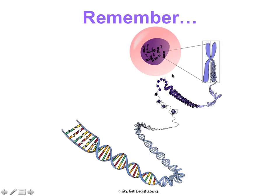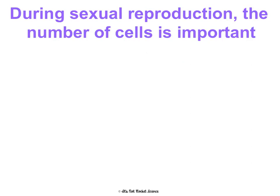Remember, this is just our structure of DNA — it's all coiled up into chromosomes. This is showing sister chromatids, showing duplicated chromosomes in the nucleus of the cell. This preface is so important because meiosis is sexual reproduction. In sexual reproduction, the number of cells and the number of chromosomes is so important.